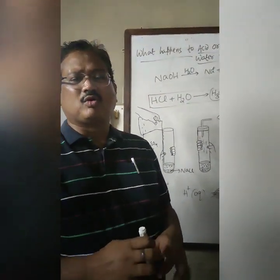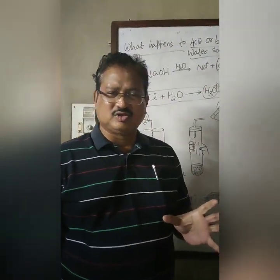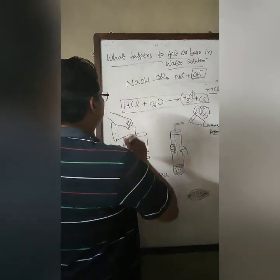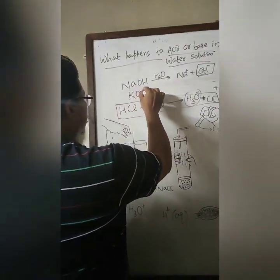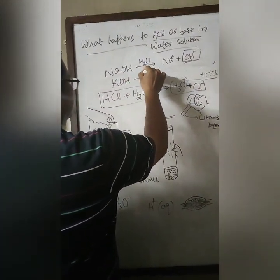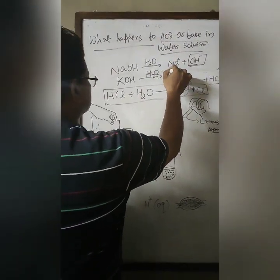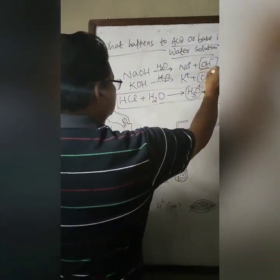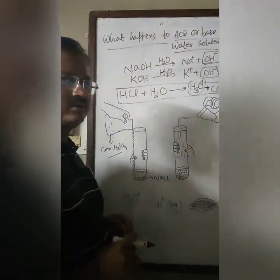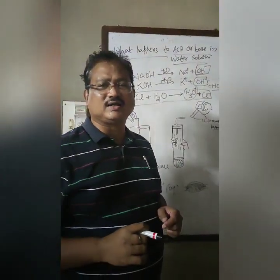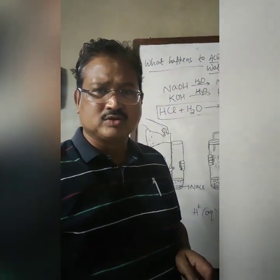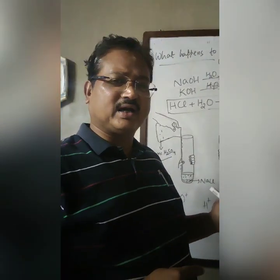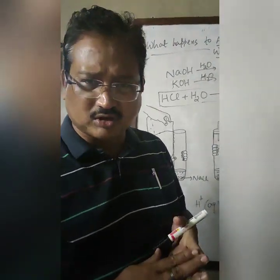Remember, all bases do not dissolve in water. Bases like sodium hydroxide and potassium hydroxide can produce K⁺ and OH⁻. The bases which are soluble in water are considered alkaline — caustic potassium and caustic soda are alkaline.